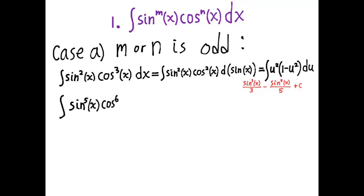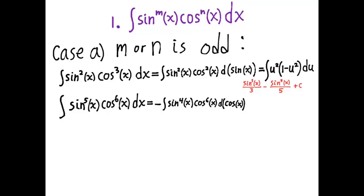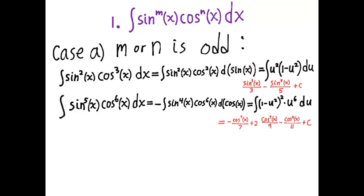Another example: the integral of sine to the fifth x times cosine to the sixth x dx. Here m is odd and n is even, so we're still in Case A. We take out a factor of sine of x, because sine of x dx is negative d cosine of x. We put a negative sign here to account for that. We then have an even power of sine remaining, so we rewrite the sines in terms of cosine: sine to the fourth of x is the same as (1 minus cosine squared) quantity squared. Then we integrate using the power rule and rewrite everything in terms of u as cosine of x.